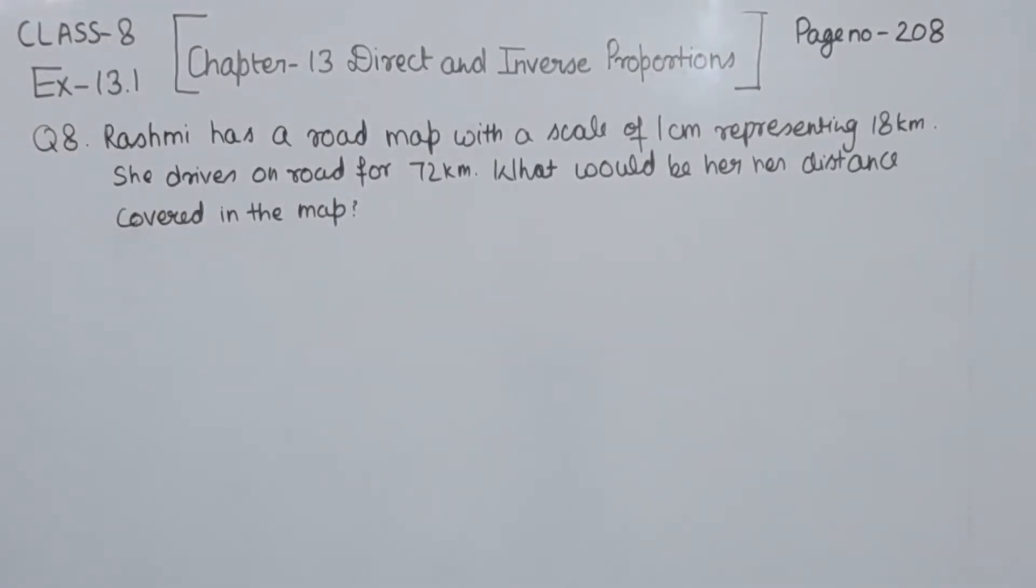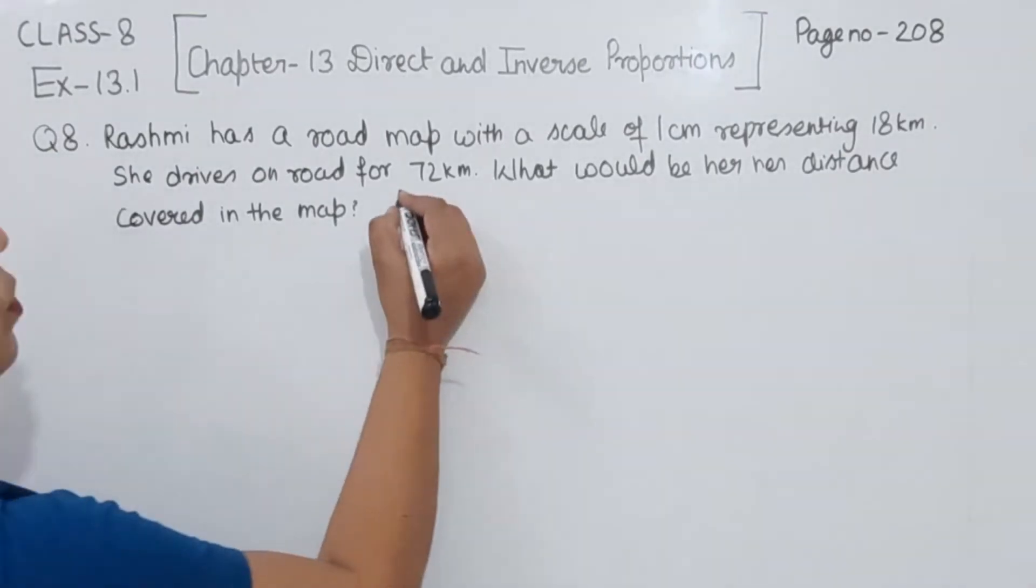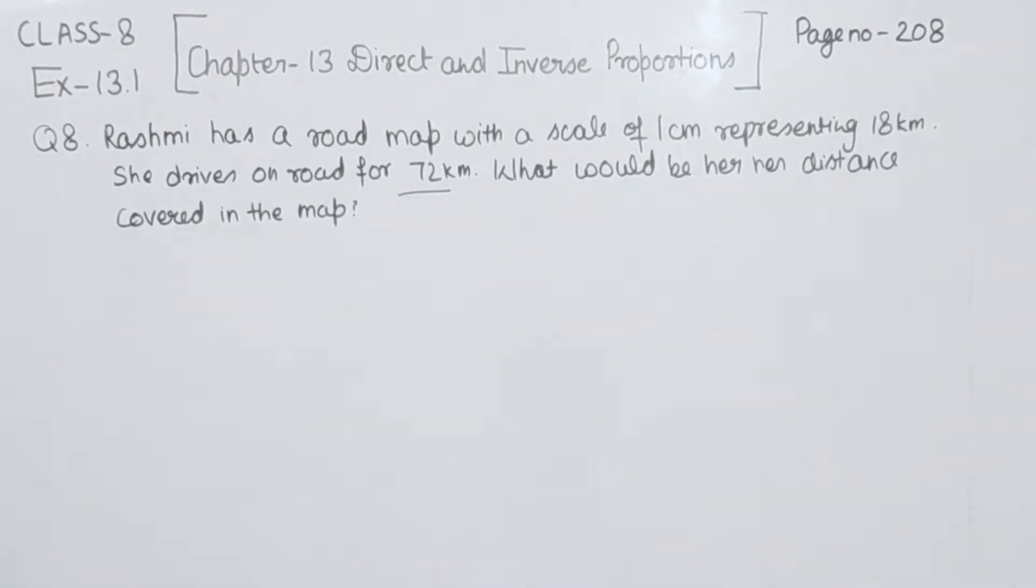Rashmi has a road map with a scale of 1 cm representing 18 km. She drives on a road for 72 km. What would be her distance covered in the map?